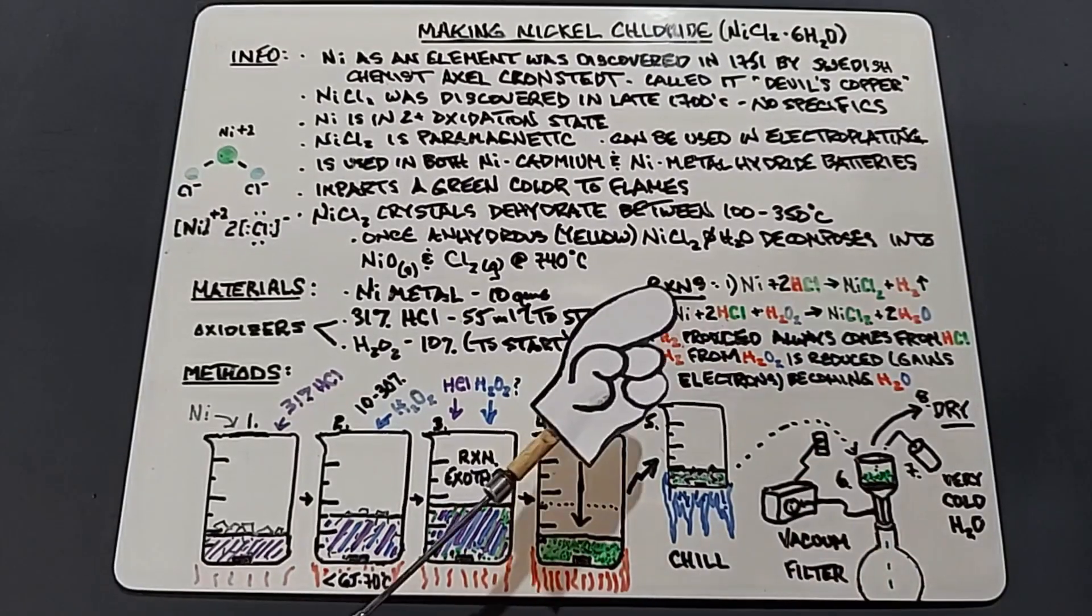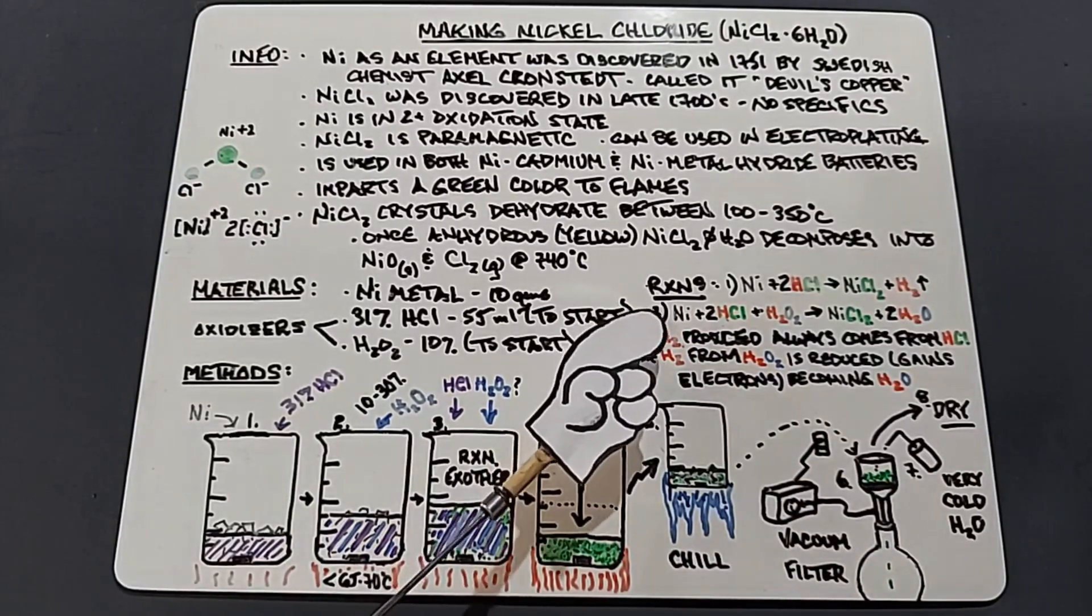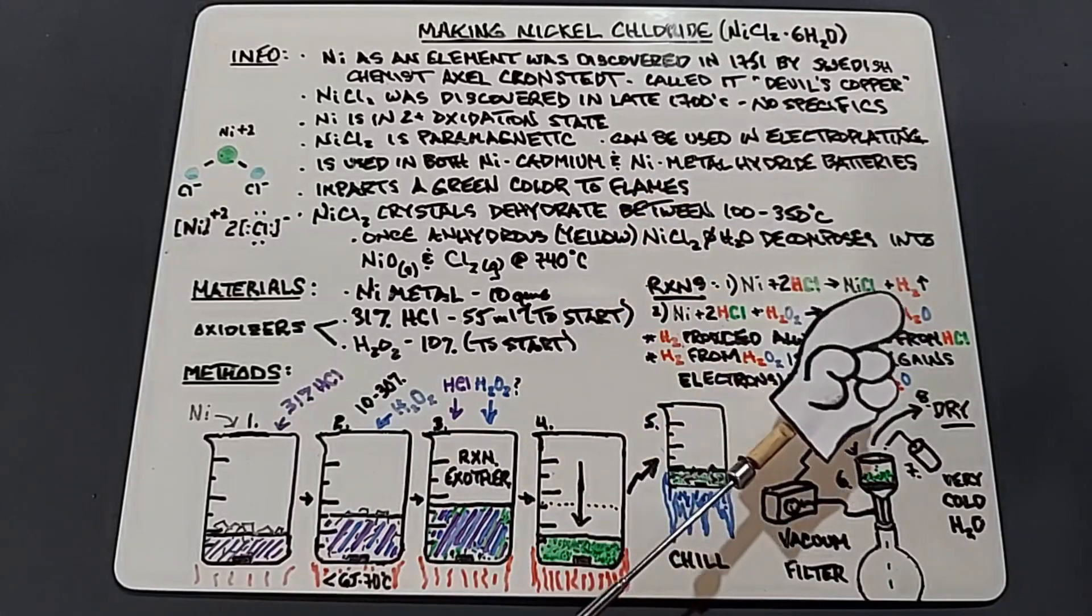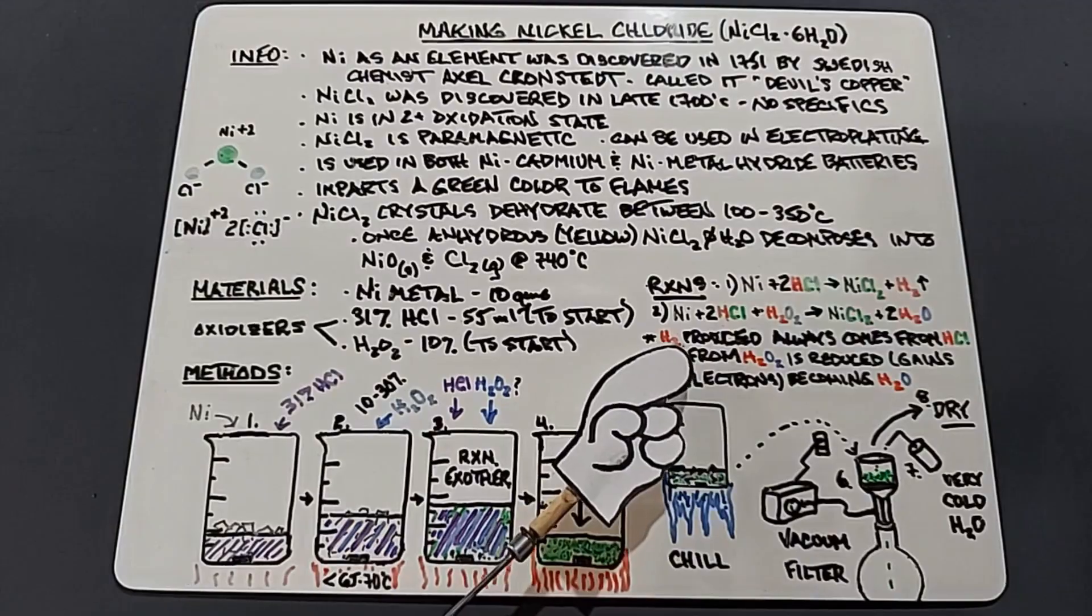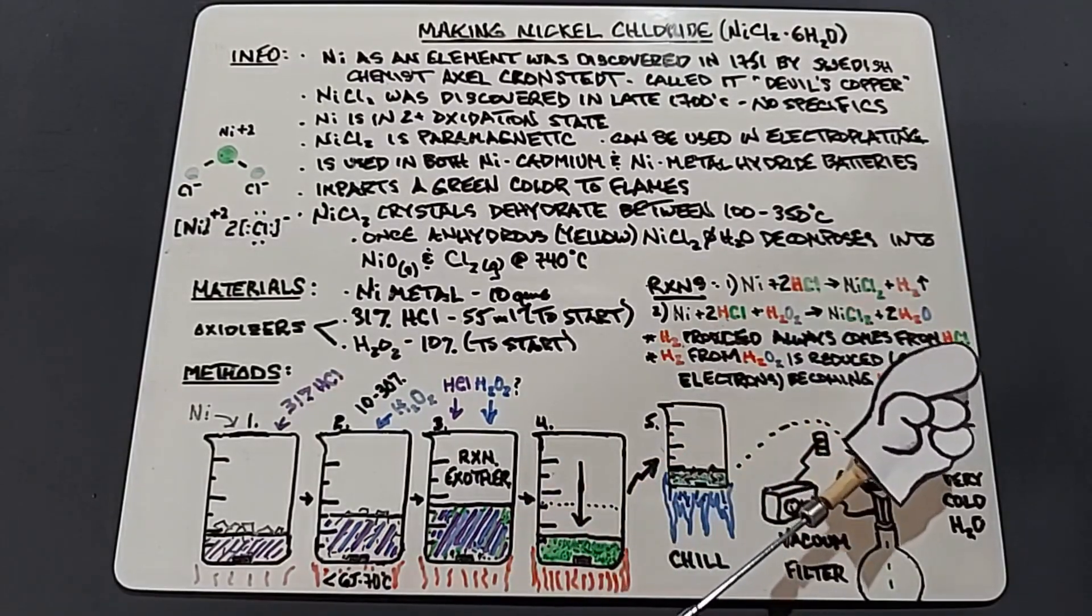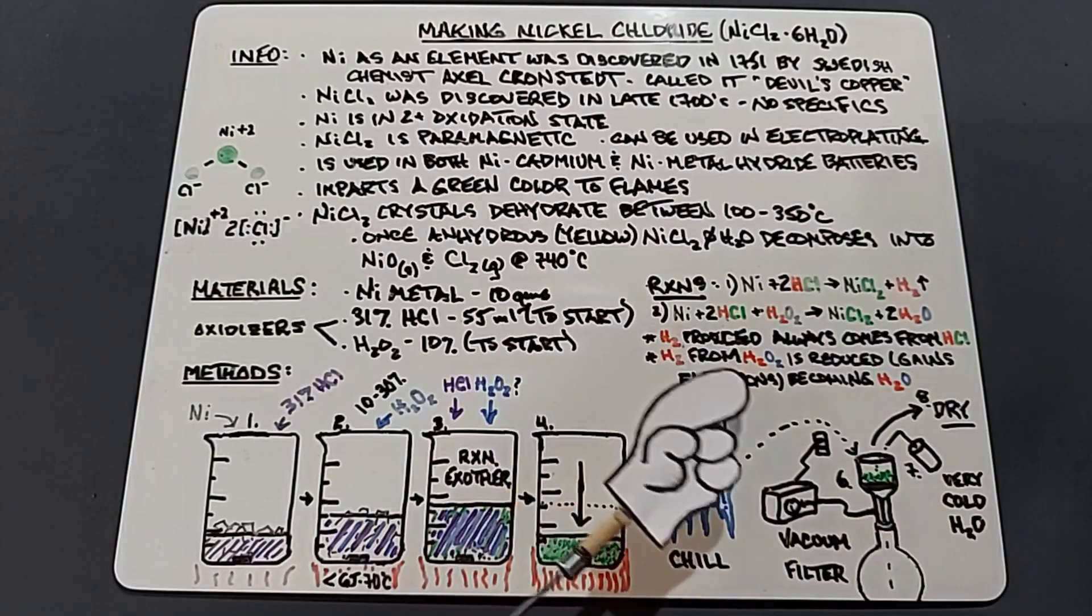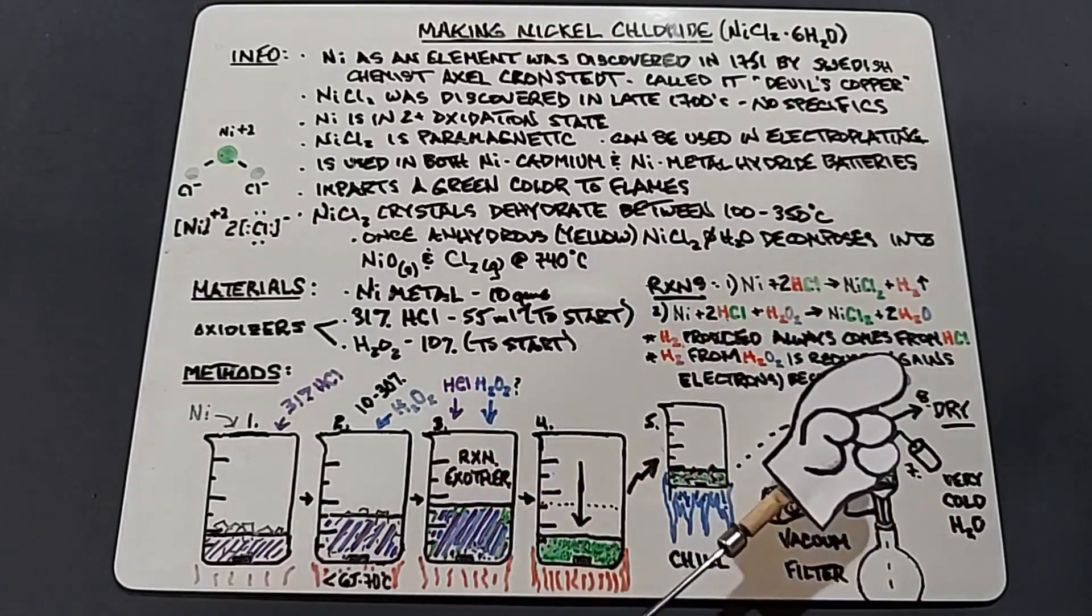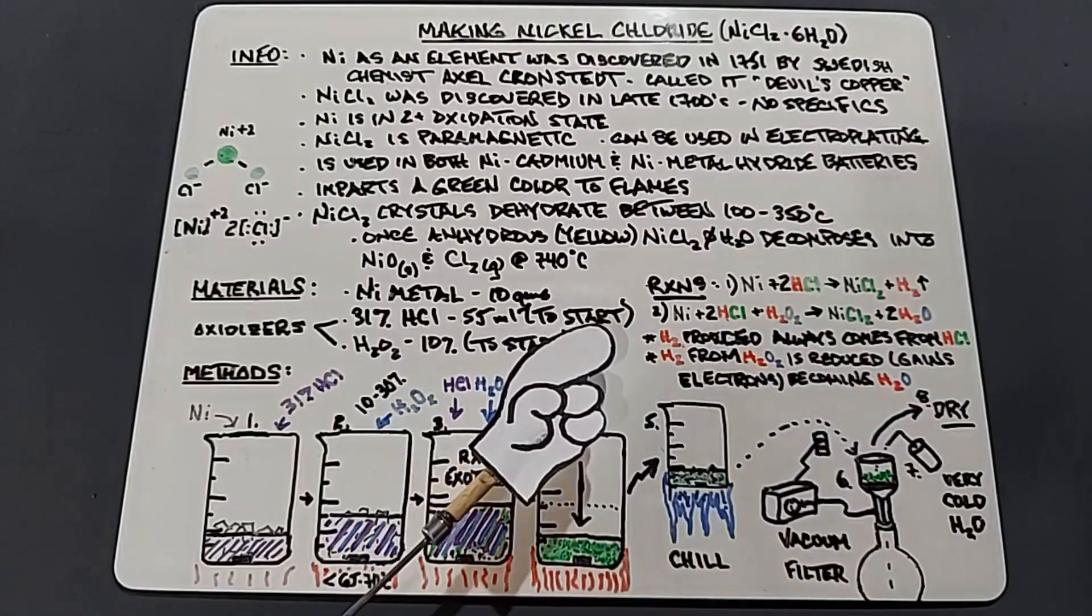The overall reaction if you're using hydrogen peroxide is nickel plus 2HCl plus H₂O₂ yields nickel chloride plus two waters. The H₂ or hydrogen gas that comes from this reaction always comes from the hydrochloric acid, and the hydrogen from the H₂O₂ is reduced, meaning it gains two electrons becoming H₂O. Just a comment on where the hydrogens come from and what they turn into.